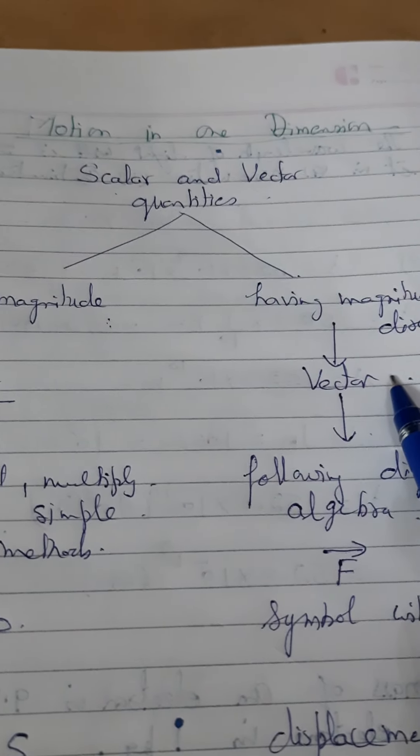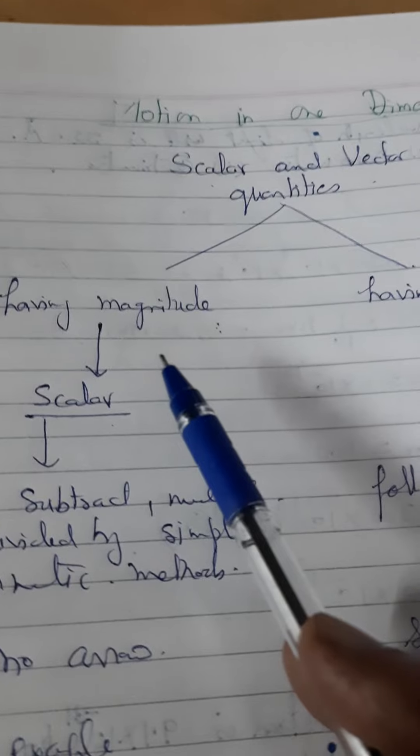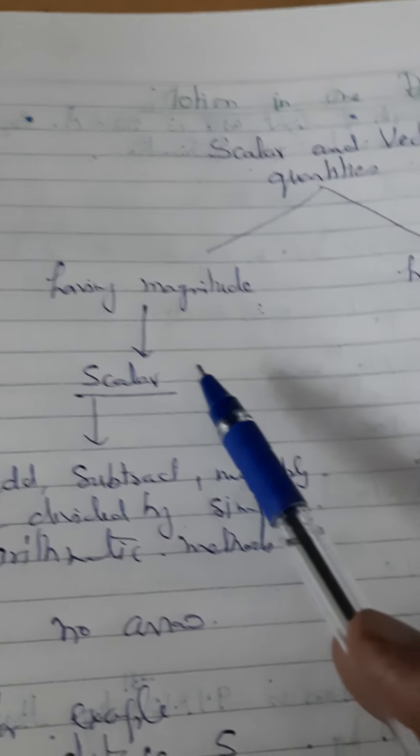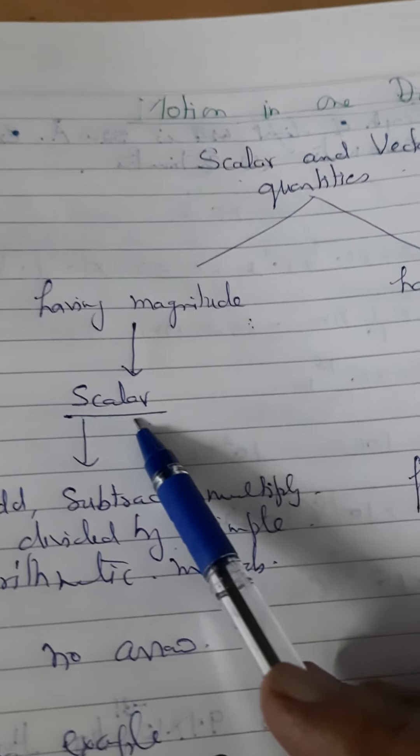What is the difference between scalar and vector quantities? For example, we take distance, length, mass, time, density, volume, speed. All are scalar quantities.